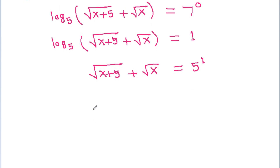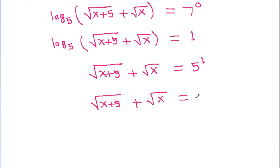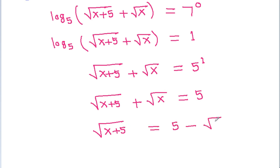So square root of (x plus 5) plus square root of x is equal to 5. Therefore, square root of (x plus 5) will be equal to 5 minus square root of x.